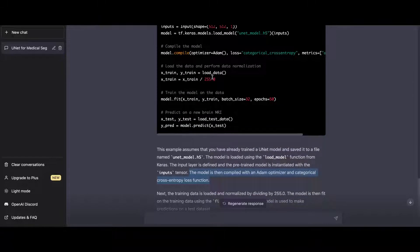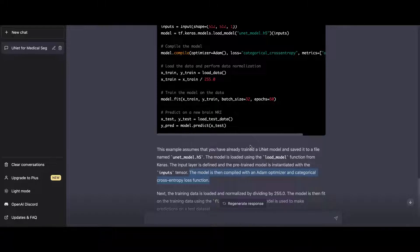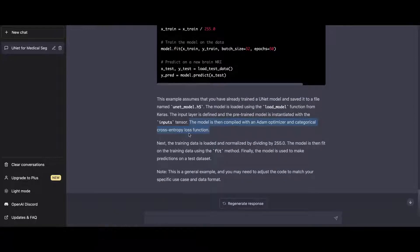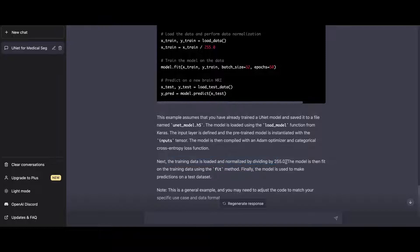Then, the training data is loaded and normalized by dividing by 255. The model is then fit on the training data using the fit method, which is basically here. Note that this is an example. Obviously, you need to change your code accordingly. This is how the model works. You train the model. You apply the categorical cross-entropy because you need to return the probability map. And then you fit the model. For prediction, you can call it on a new brain MRI dataset. This is how the UNET model works.